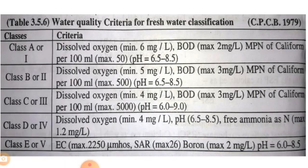A further chart describes water quality criteria for fresh water classification, showing Classes A, B, C, D, and E with parameters including dissolved oxygen percentage, BOD, MPN coliforms per 100 mL. This chart describes the water quality criteria for each fresh water class.